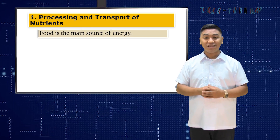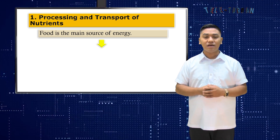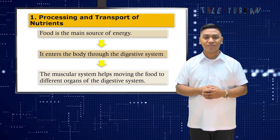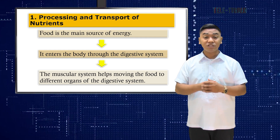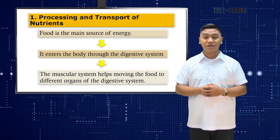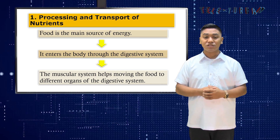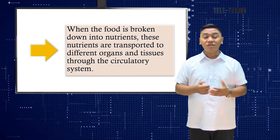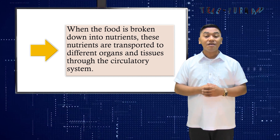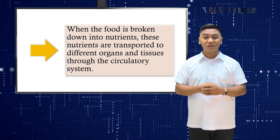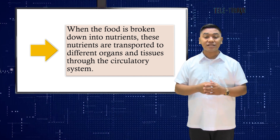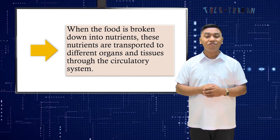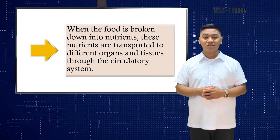In humans, food is the main source of energy. It enters the body through the digestive system which breaks it down into nutrients. The muscular system helps move the food to different organs of the digestive system. For example, muscles around the stomach contract and move food to the small intestine. When the food is broken down into nutrients, these nutrients are transported to different organs and tissues through the circulatory system. Nutrients from the small intestine enter the blood vessels and are then transported by the blood throughout the body.